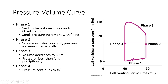Phase one is ventricular filling. We can see that volume rises — as the ventricle fills with more blood, volume goes from 60 milliliters, our end systolic volume, all the way to 130 milliliters, our end diastolic volume. The pressure slightly rises but not by a whole lot. Volume, more importantly, is what rises rapidly as blood fills into the ventricle.